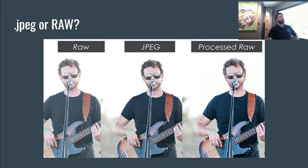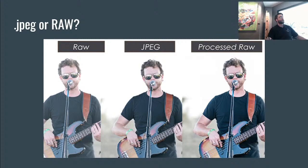An example of that is the processed RAW photo all the way to the right. You can see the processed RAW versus the JPEG — there's more detail in the processed RAW. We see the wrinkles of the shirt a little better. The color on the shirt is less exposed and you can see the light parts of the dark. His forehead has less shine and more detail. Looking at the arm playing strings on the bass, you're going to see more of the strings and more detail in the arm.